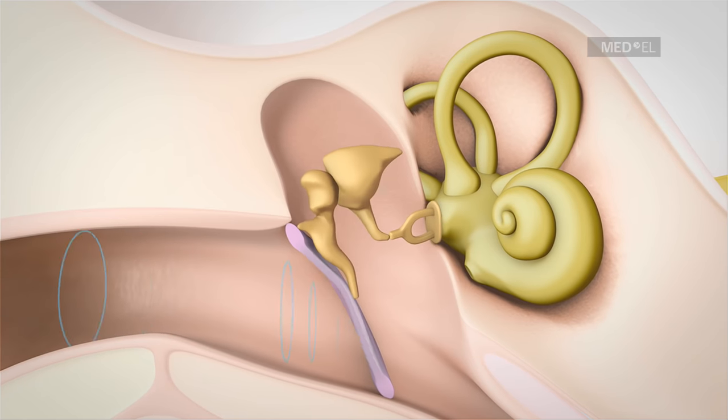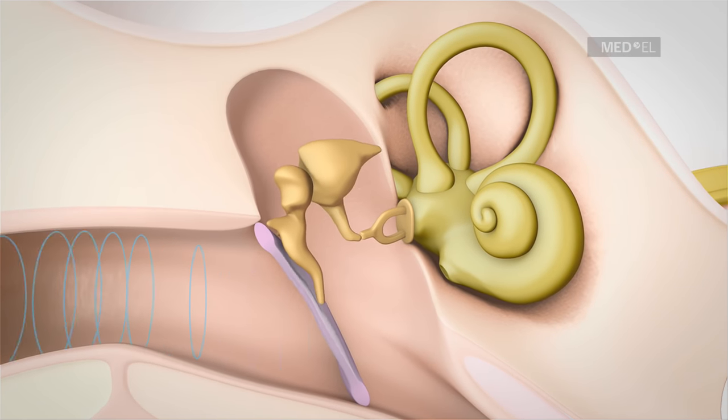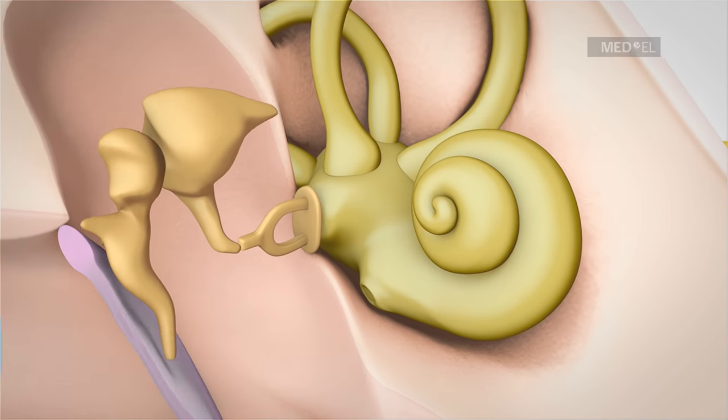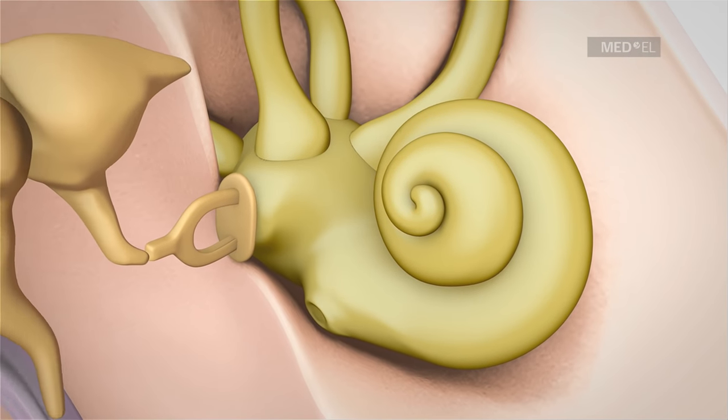Sound vibrations move along the ossicular chain and into the inner ear. Within the inner ear, the cochlea plays a central role.